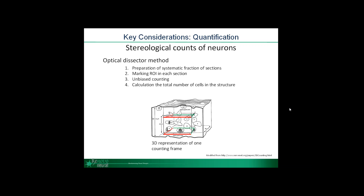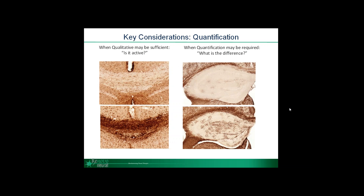While stereology is a gold standard for estimating cell numbers, it comes with a heavy trade-off in terms of the manpower needed to perform the analysis. When it comes to quantifying the staining itself, how you proceed really depends on the question you're asking. If you're asking whether something is turned on — a simple yes or no question, such as whether there is microglial staining in the corpus callosum — this can be answered quickly without the need for further quantification. But if the question is how much, automated quantification may be more suitable and sensitive to detect changes as low as 10 to 20 percent.